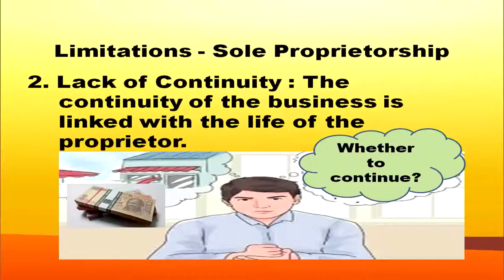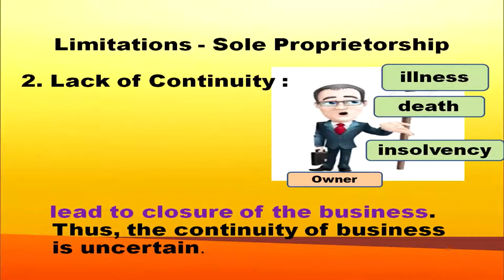Another limitation is lack of continuity. The continuity of a sole proprietorship is linked with the life and capacity of the proprietor to run the business. If the owner is not interested or if something happens to the owner, such a form of business organization will come to an end. Illness, death, or insolvency of the owner will lead to closure of the business. Thus, continuity of business is uncertain.